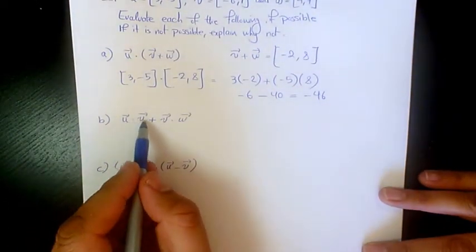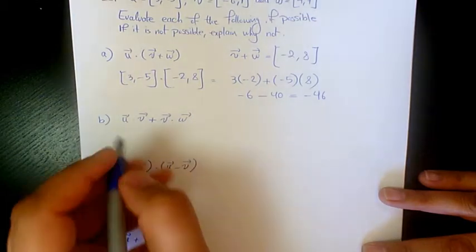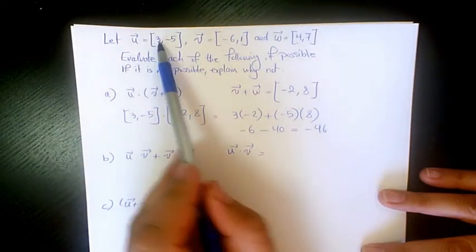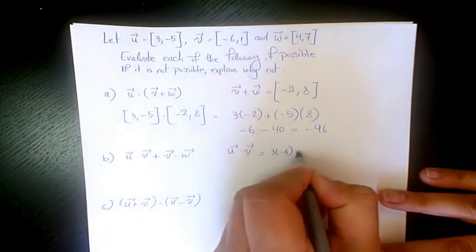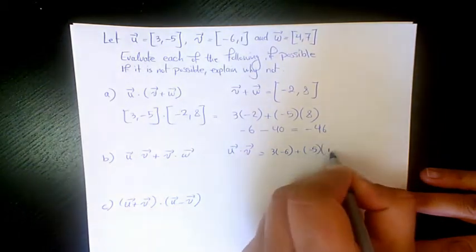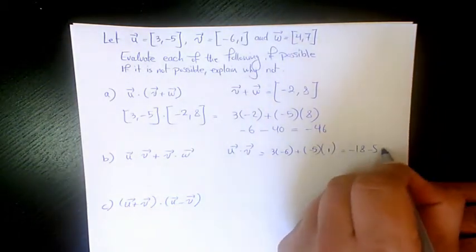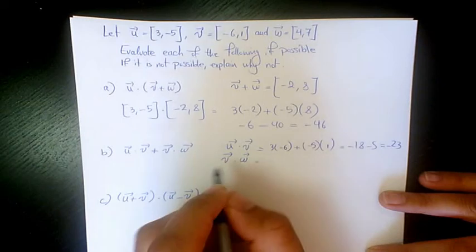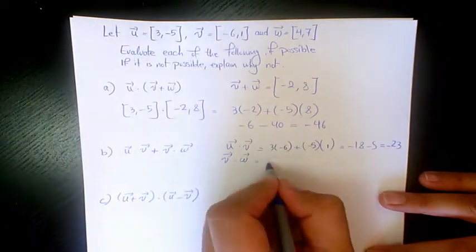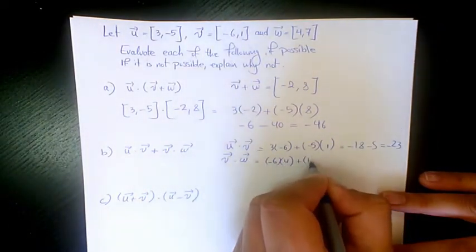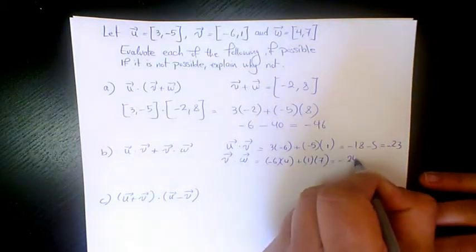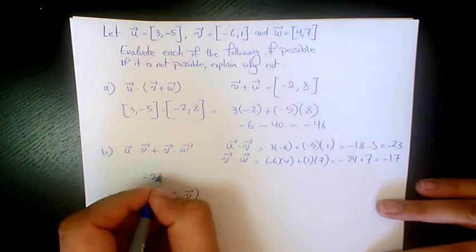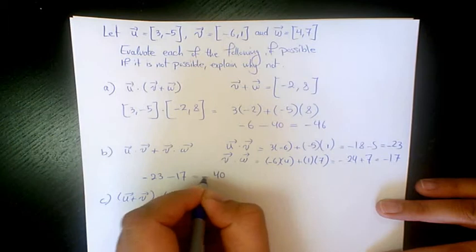Next, u dot v plus v dot w. First, u dot v = 3 times -6 plus -5 times 1 = -18 minus 5 = -23. Then v dot w = -6 times 4 plus 1 times 7 = -24 plus 7 = -17. Adding these: -23 plus -17 = -40.